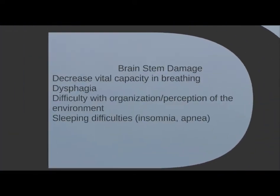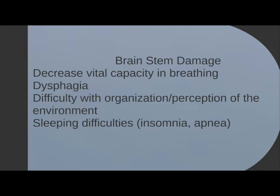Moving down to the brainstem: the brainstem is essentially a relay and processing center. Key areas within the brainstem control automatic or autonomic activities such as breathing, heart rate, and our circadian rhythm. If you have brainstem damage, you can have decreased vital capacity and breathing difficulty, dysphagia, difficulty with organizing or perception of the environment, and sleeping difficulties. This all comes back to how it's a relay center — afferents coming in coordinating with efferents going out. If that relay is disrupted, you'll naturally have difficulty with speech and organization and perception of the environment.